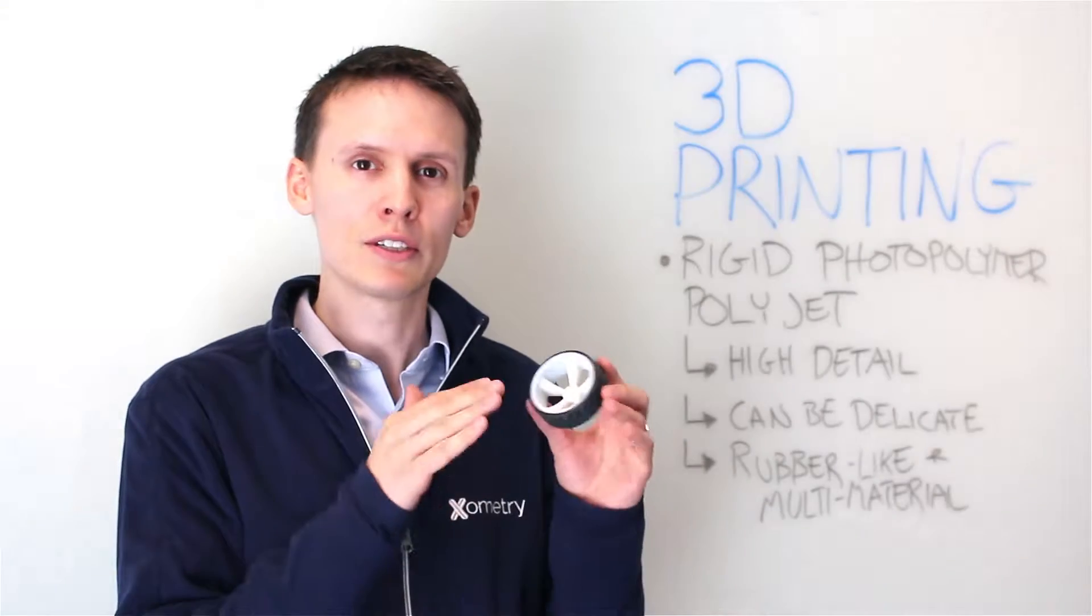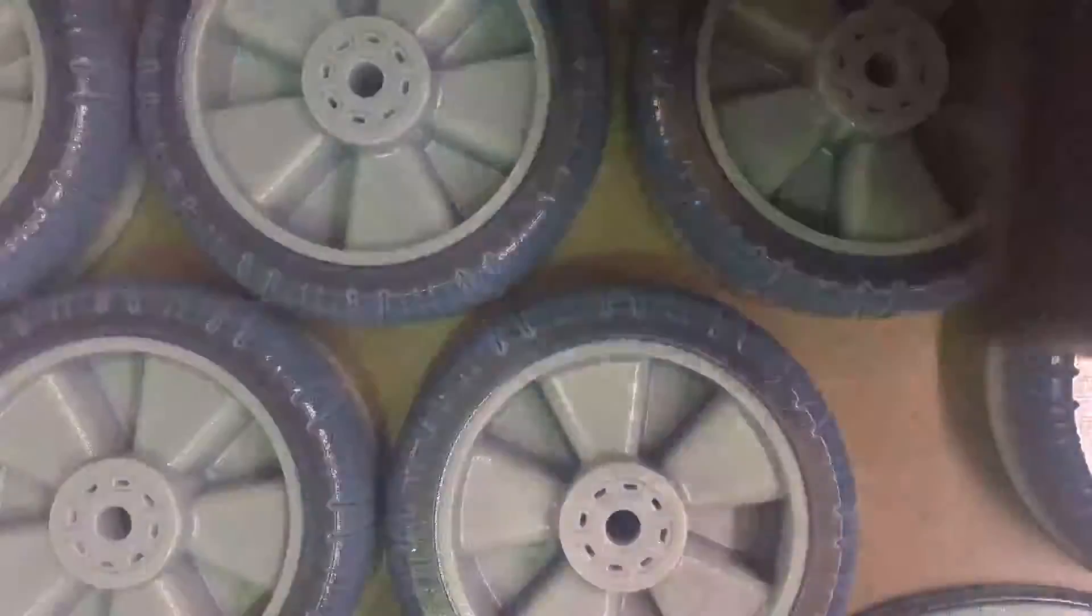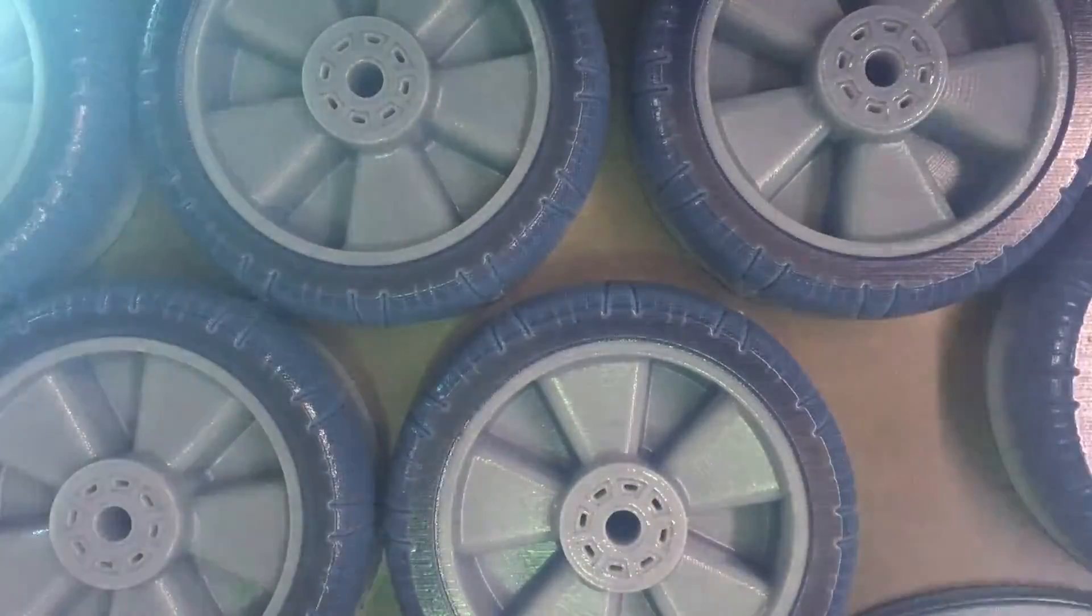PolyJet is a rigid photopolymer 3D printing process typically used to make high detailed models. It takes a liquid photopolymer and carries it layer by layer, building a part from the bottom to the top.